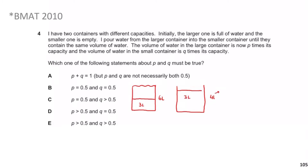With 3 litres in each: the 4-litre container is 75% full, so q = 0.75. The 6-litre container is 50% full, so p = 0.5. So p = 0.5 and q > 0.5, meaning q > p. This fits answer C.